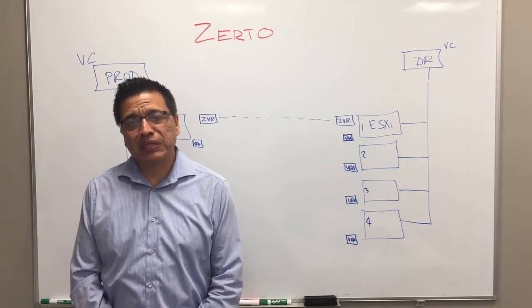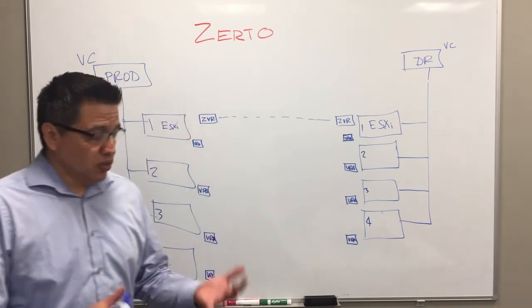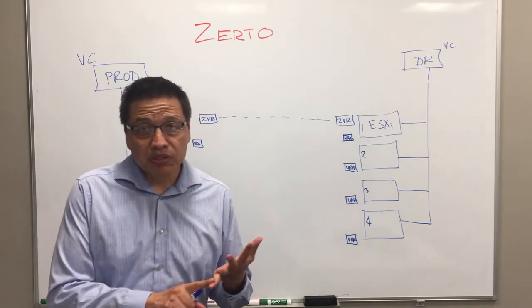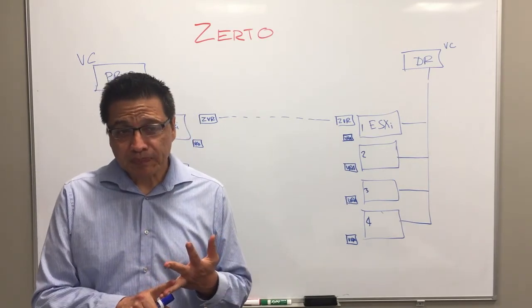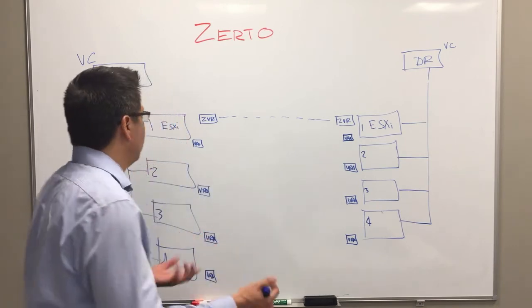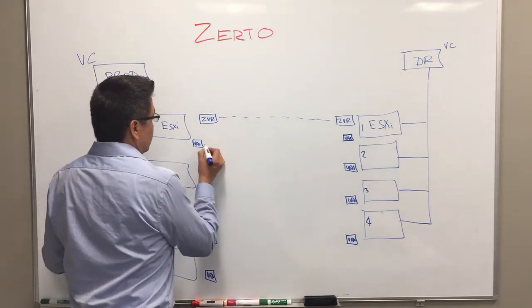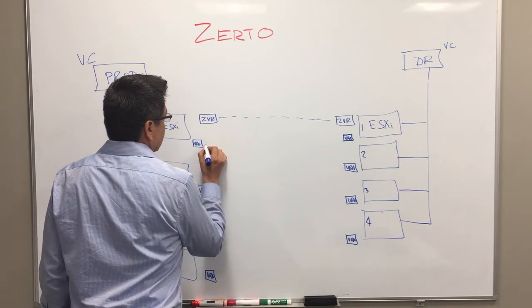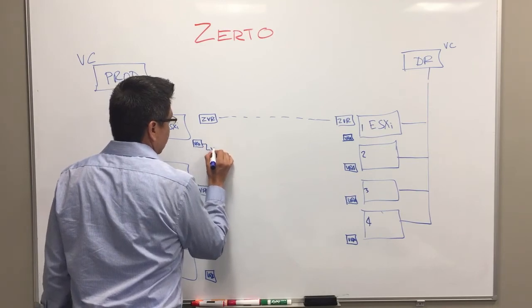We're not going to be interfering with any production. At any rate, so we ask for a VM that is non-production, that is as small as possible. I'll tell you why in a minute. And we start setting up the replication. So for the replication, what we do at the VRA in production, we configure the first VPG. Let's say this is VPG1.